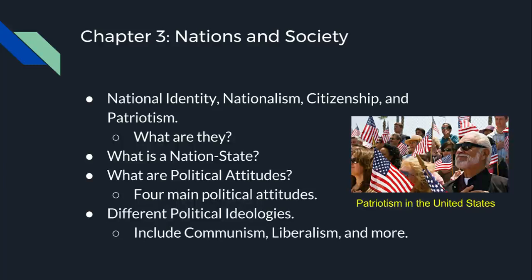Then we get into nation states. A nation state is a sovereign state encompassing one dominant nation — a great example of this would be Japan. Then we get into political attitudes, which describe views regarding the necessary pace of change and the balance between freedom and equality. We have four: radicals, liberals, conservatives, and reactionaries. Radicals believe in dramatic change of the economic order. Liberals favor evolutionary change. Conservatives question whether significant change in existing institutions is even necessary. And reactionaries seek to restore political, social, and economic institutions.